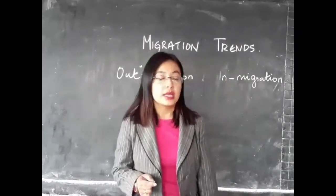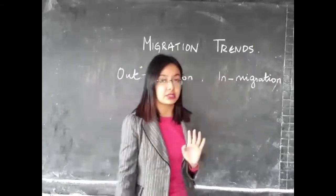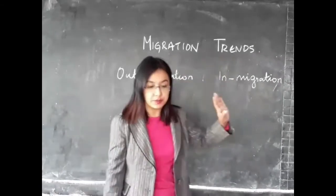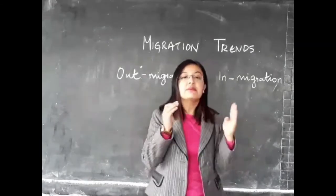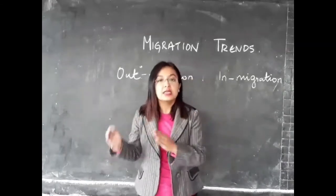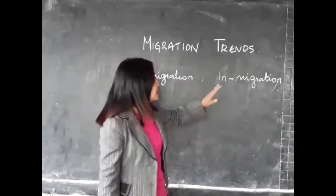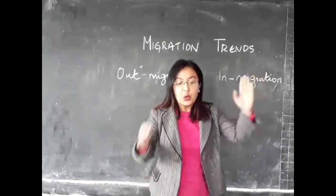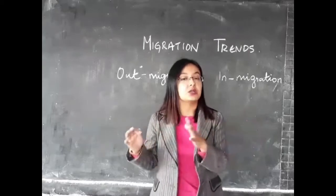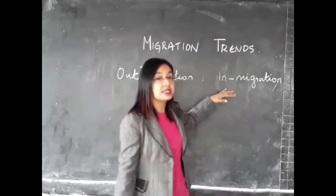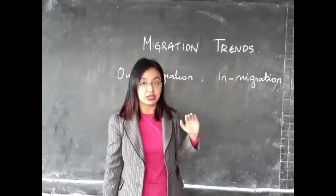The next concept is out migration and in migration. Out migration means when people leave a place and migrate to some other place — since they are leaving the place, that is considered out migration. When people come from other places and settle down at a particular place, that is considered in migration, since they are moving into the place.